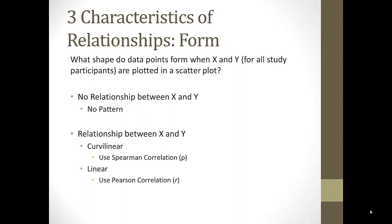If you remember, x represents the independent variable, y represents the dependent variable, and you measure the independent and dependent variable for everybody in your sample and then plot dots on a scatter plot. Each dot represents one person's value of x and one person's value of y. We'll look at examples here in just a second.